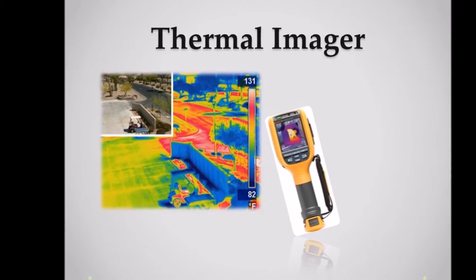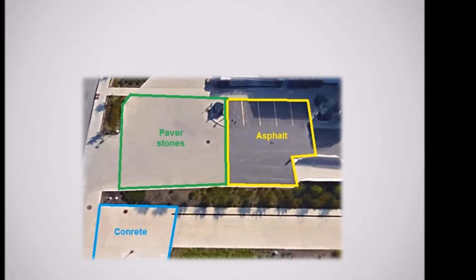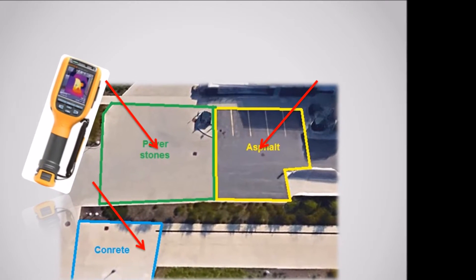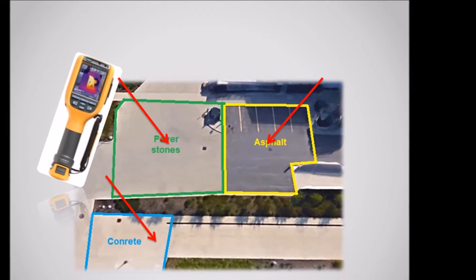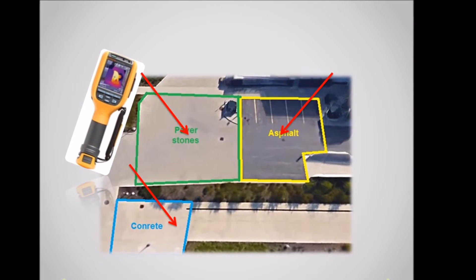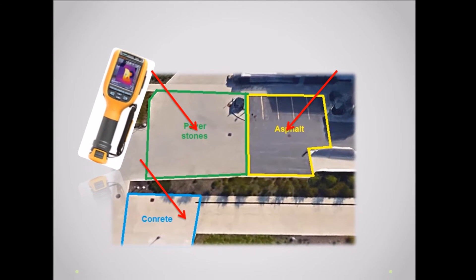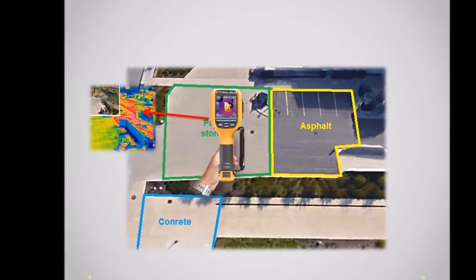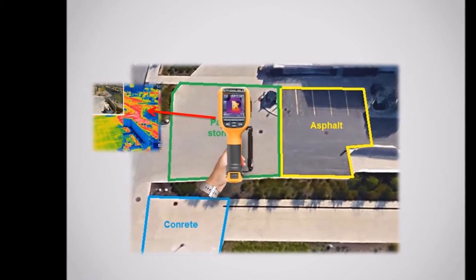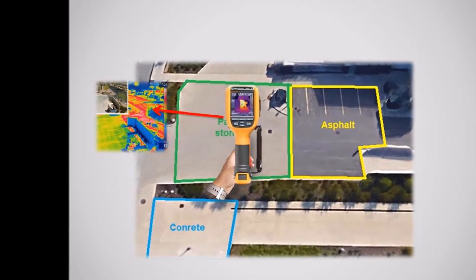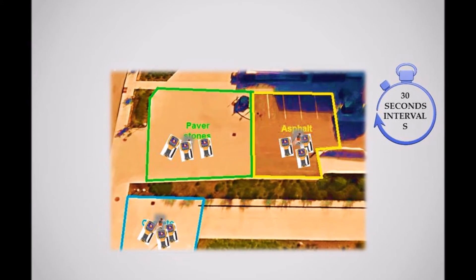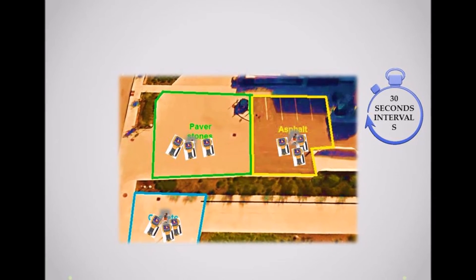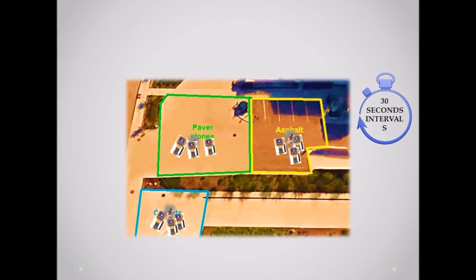The thermal imager is used to record the surface temperature. The temperature is taken from the center of the testing area to ensure a consistent heat measurement throughout the sample. The thermal imager is held 3 feet, approximately waist height, from the testing surface. Three measurements are taken in 30-second intervals to give an average temperature for a more accurate reading.